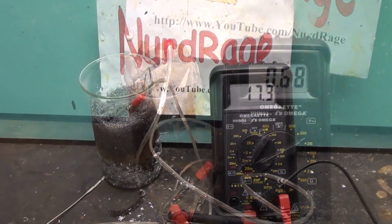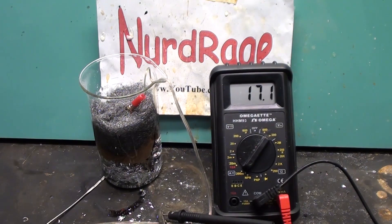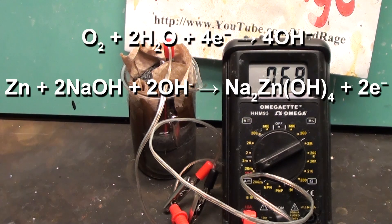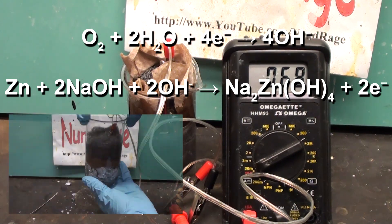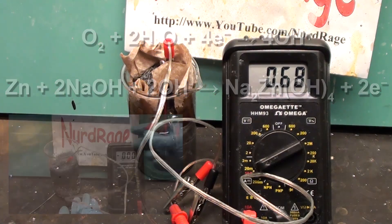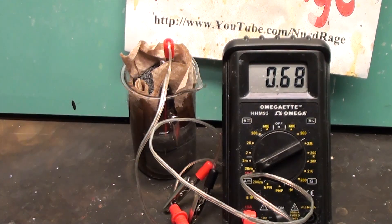This is much better than the 17 milliamps of the homemade aluminum air battery of the previous video. The reactions are similar. The iron is catalyzing the reaction of oxygen and water to make hydroxide, while the zinc metal reacts to make sodium zincate. What makes this battery work better is that the sodium zincate is soluble and doesn't block the reactions like the aluminum oxide formed in the aluminum air battery. That's why we can get a much higher current.